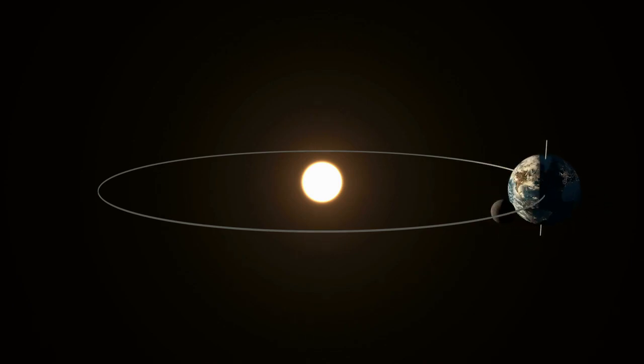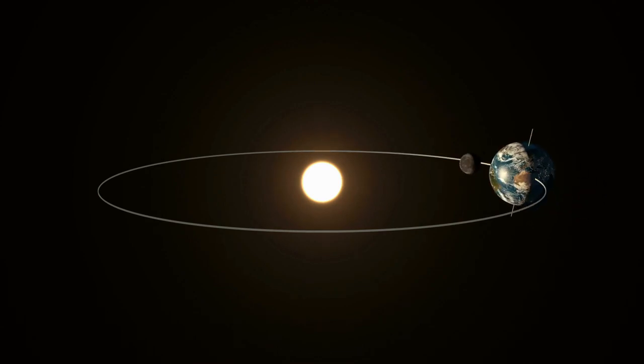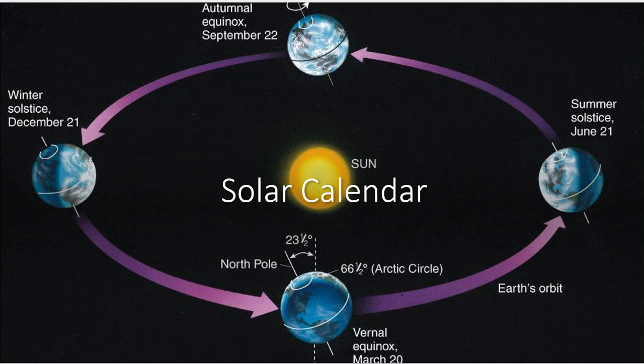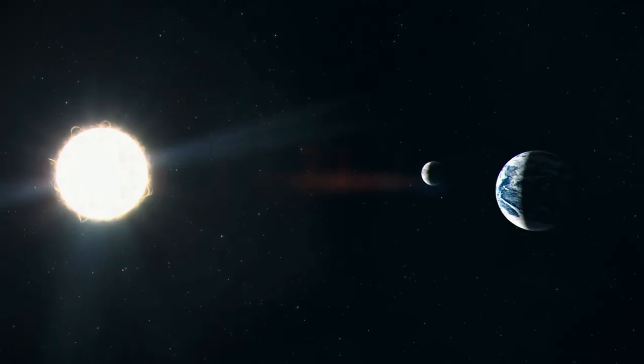A solar year is the time it takes for the Earth to complete one revolution around the sun. We simply say Earth takes 365 days to orbit the sun. If you want to know the real time, Earth revolves around the sun in 365 days, 5 hours, 59 minutes, and 16 seconds. This means an extra day is added in the month of February every four years — we call it a leap year: 366 days instead of 365.